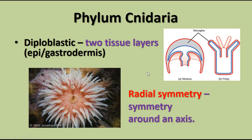Cnidarians are diploblastic, so they do have true tissues — two layers of tissue. They don't develop a third layer. They have an epidermis, the outer layer, and then what becomes something called the gastrodermis. 'Gastro' means stomach, so this is basically the digestive surface that covers the digestive cavity. Cnidarians exhibit radial symmetry, meaning they have symmetry around an axis — if you cut the sea anemone in half on any axis, you would get relatively equal mirror image sides.